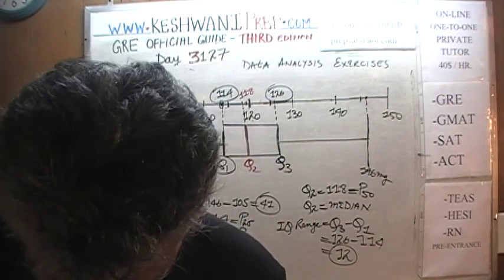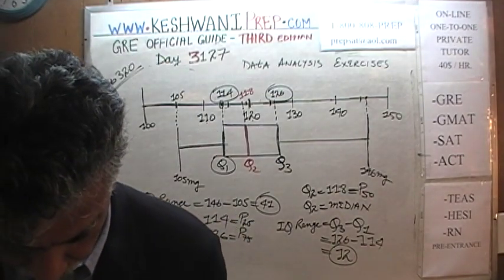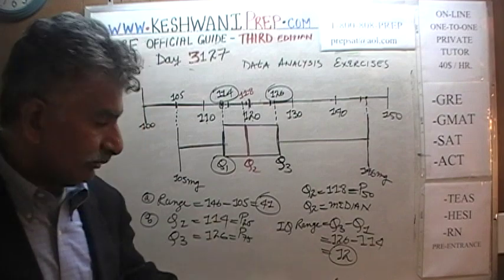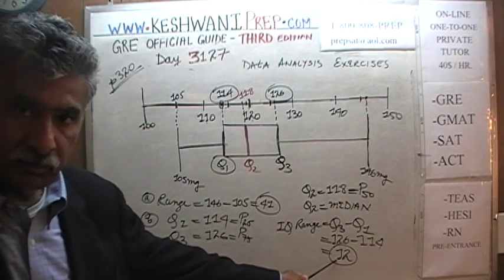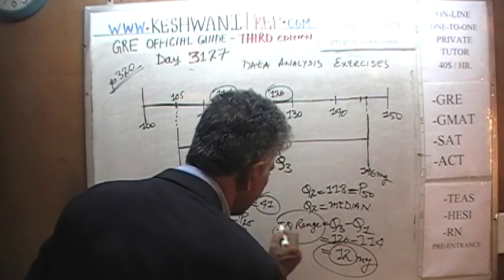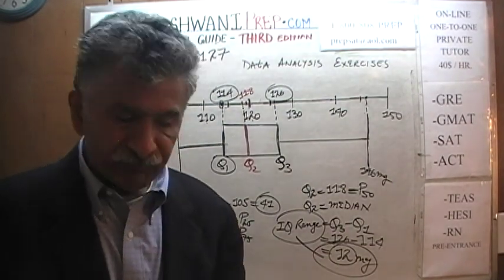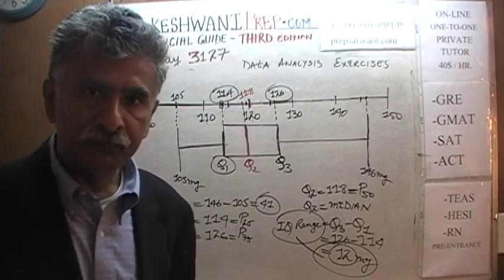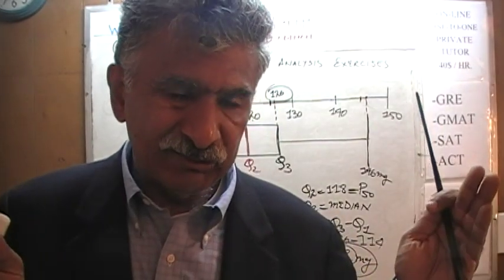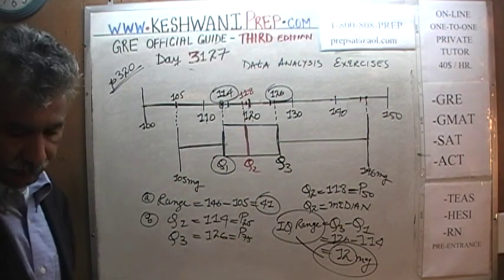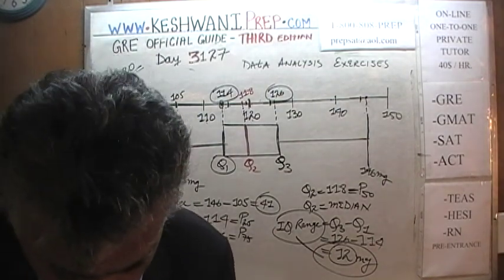The interquartile range is 12. What does this 12 milligrams figure tell us? It tells us the difference between the heaviest and lightest insects in the middle 50% of the population was only 12 milligrams, whereas the difference between the heaviest and lightest among all 800 insects was 41 milligrams. That was the end of Part A.